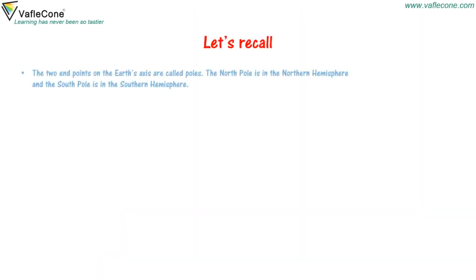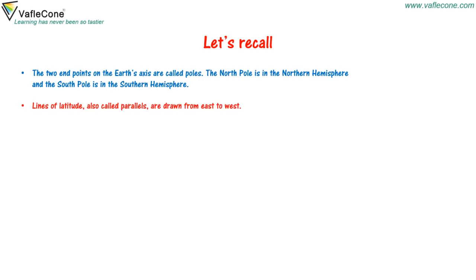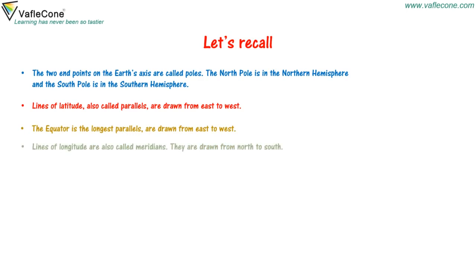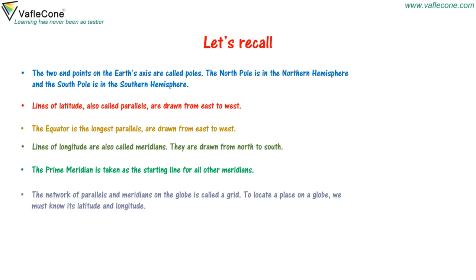Now let's recall. The two endpoints on the earth's axis are called poles. The north pole is in the northern hemisphere and the south pole is in the southern hemisphere. Lines of latitude, also called parallels, are drawn from east to west. The equator is the longest parallel. Lines of longitude are also called meridians and are drawn from north to south. The prime meridian is taken as the starting line for all other meridians. The network of parallels and meridians on the globe is called a grid. To locate a place on a globe, we must know its latitude and longitude.